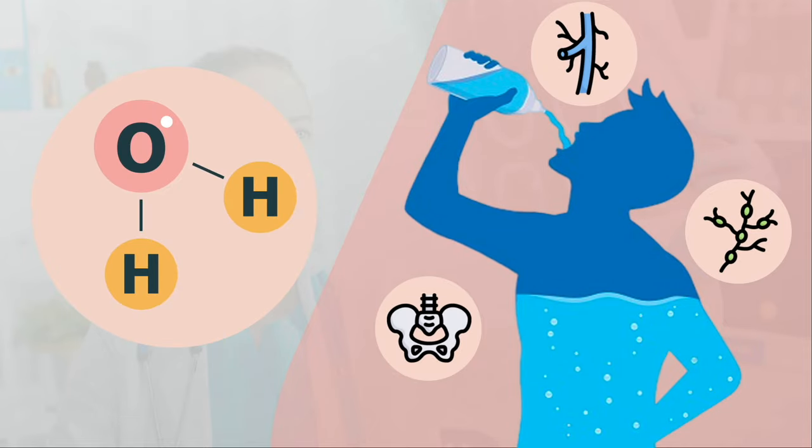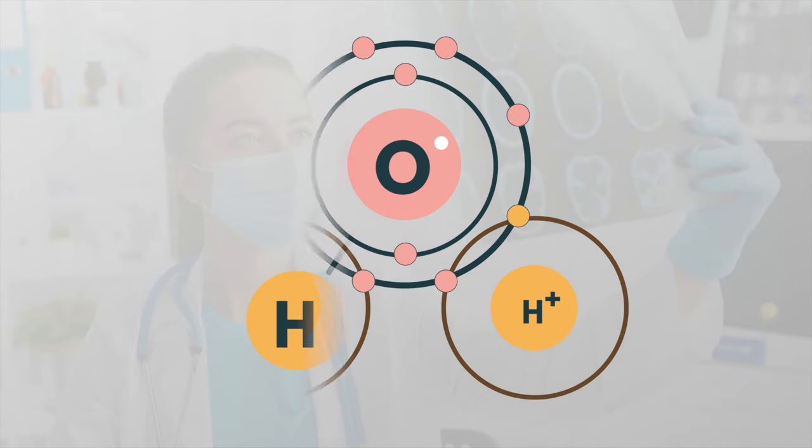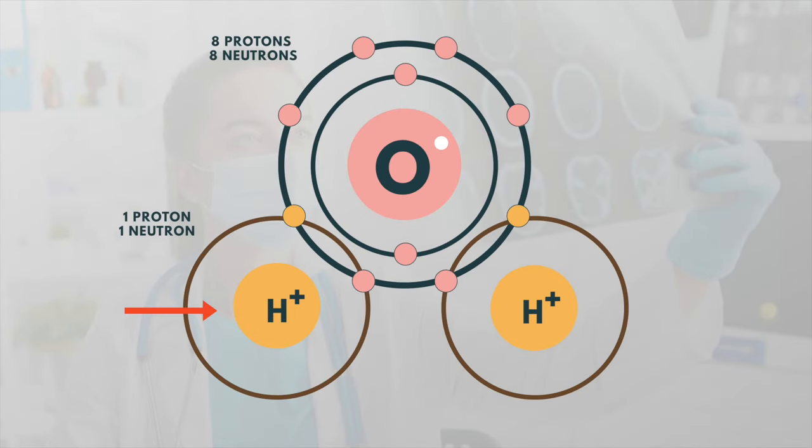A water molecule is made up of two hydrogen atoms and one oxygen atom. The hydrogen atoms are the part that makes water interesting for MRI. If we look at hydrogen in more detail, we see that it has a central nucleus containing a single positive charge called a proton.